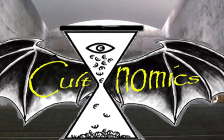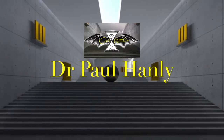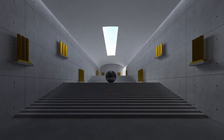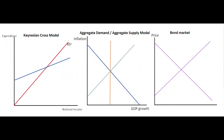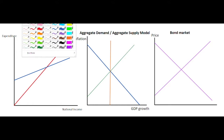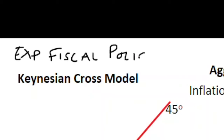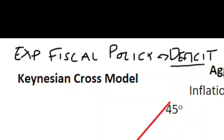Hi guys and welcome to Cultnomics. My name is Paul Hanley and today I'm going to be chatting to you about fiscal policy and exchange rates. In this video we're going to look at the impact of expansionary fiscal policy that is financed by a deficit — a government deficit — and its impact across a range of macroeconomic variables. The government is running a deficit: its expenditure is greater than its tax intake.